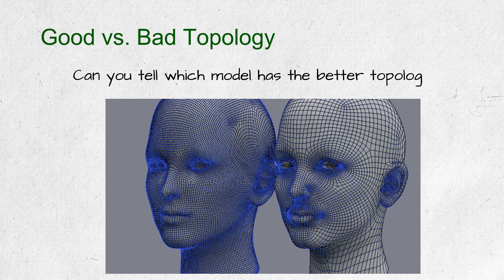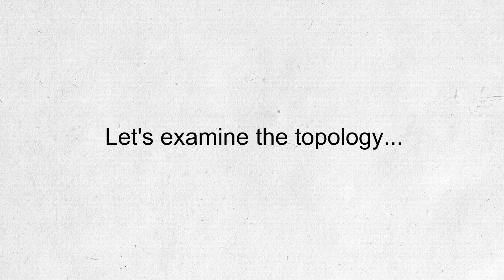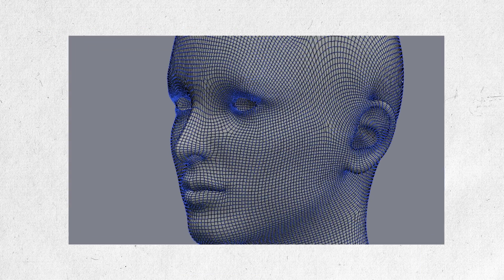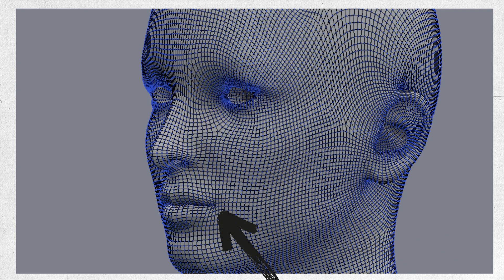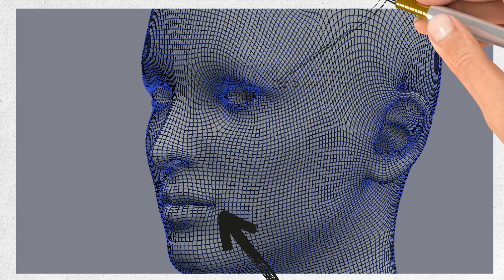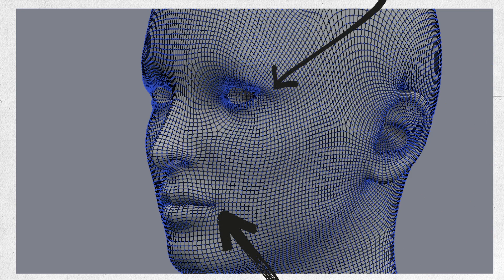Now let's take a look at good topology and bad topology. Can you tell which model has the better topology? In example one, notice how the topology doesn't follow the contours of the mouth and eyes. This will lead to animation problems later.